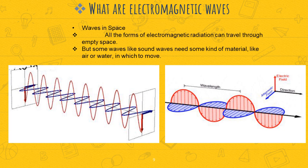EM waves are called transverse waves because the direction is perpendicular to both the electric field and the magnetic field. An important characteristic is that electromagnetic waves transport energy through empty space stored in the propagating electric and magnetic fields. Another important characteristic is that EM radiation travels at the speed of light in a vacuum — that is 3 × 10⁸ meters per second.